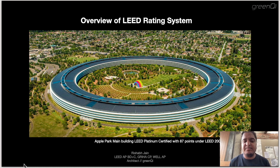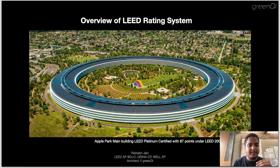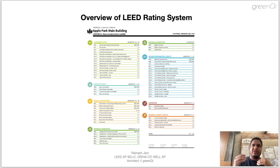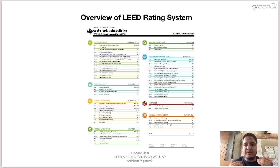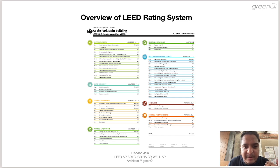One great example of a LEED Platinum building is Apple Park in California, which secured 87 points under the LEED 2009 New Construction framework, giving it a Platinum rating. When going for LEED certification, there are many categories on which the building is rated. On Apple Park's scorecard, you can clearly see the ratings per category — for example, in Sustainable Sites the building was awarded 24 out of 26 points.